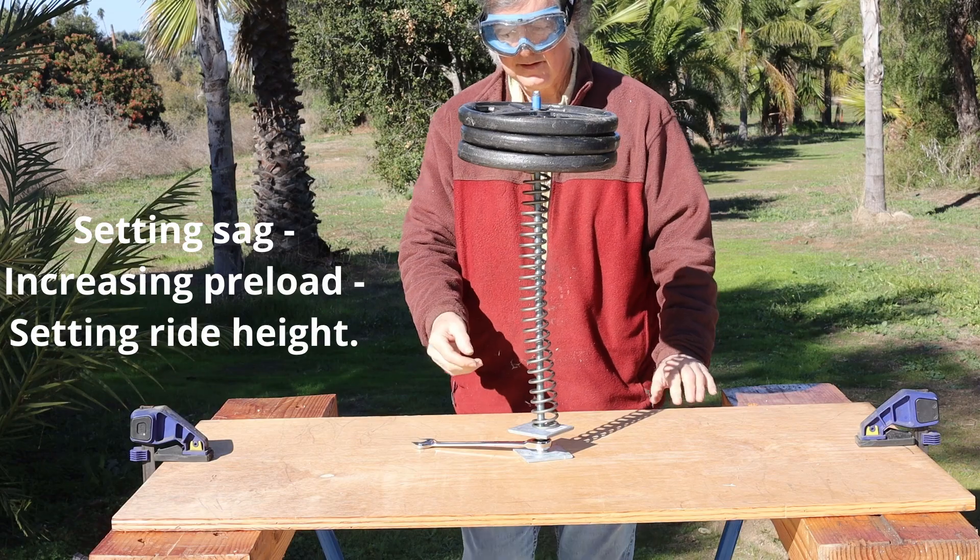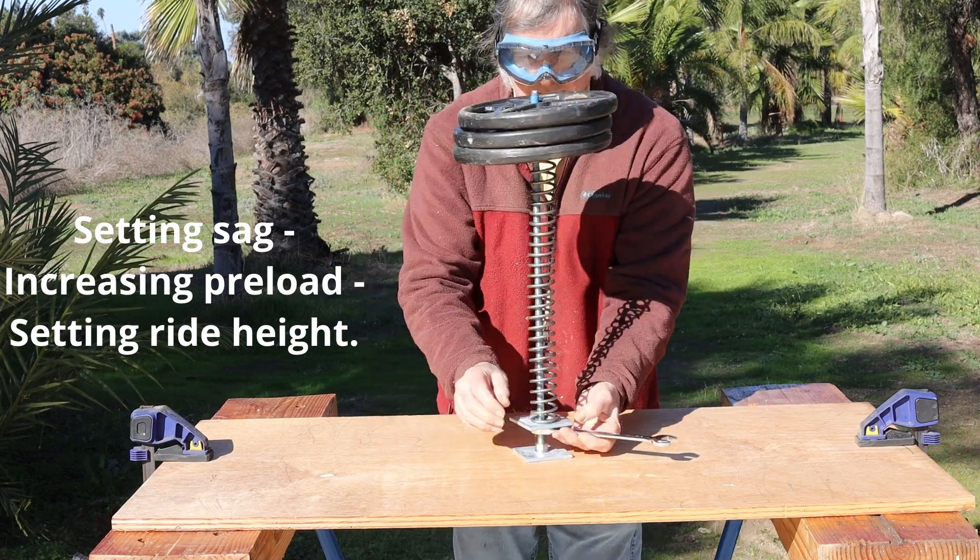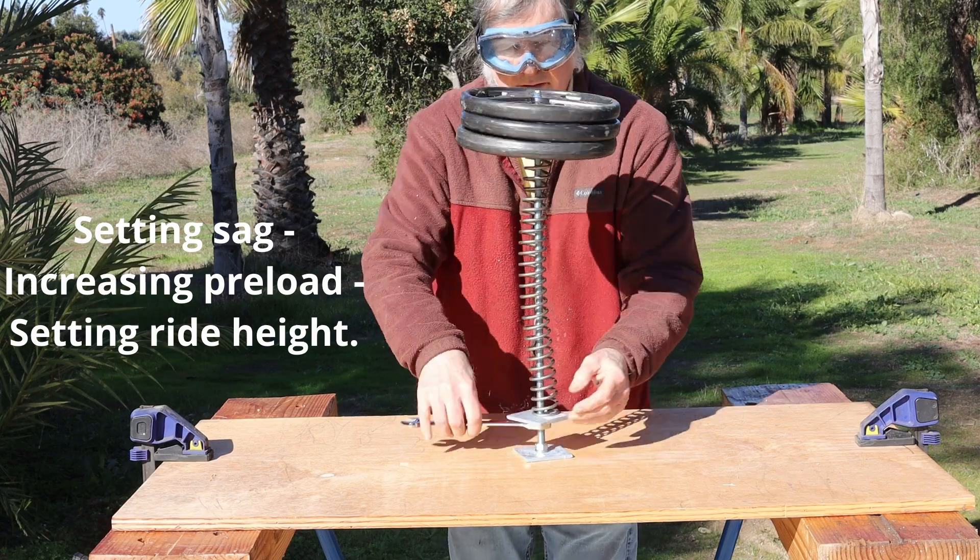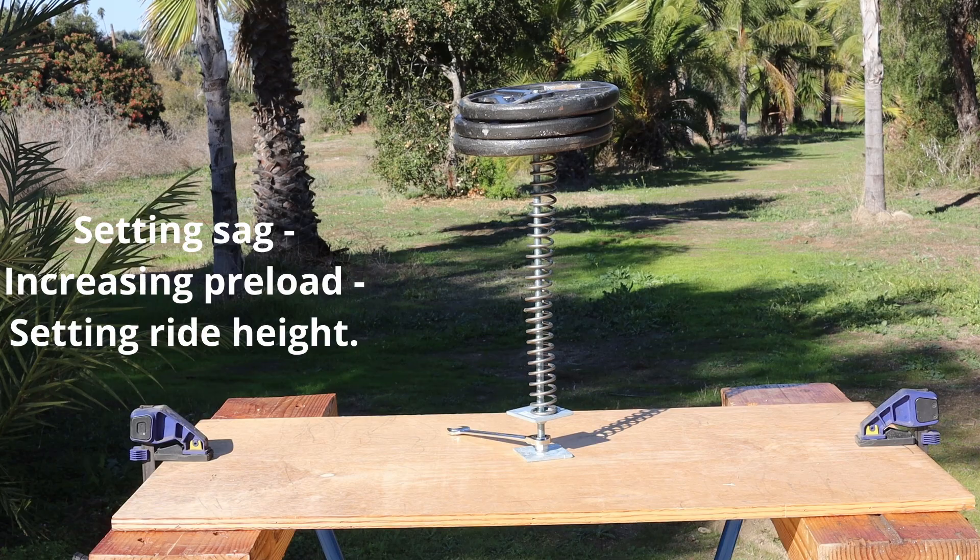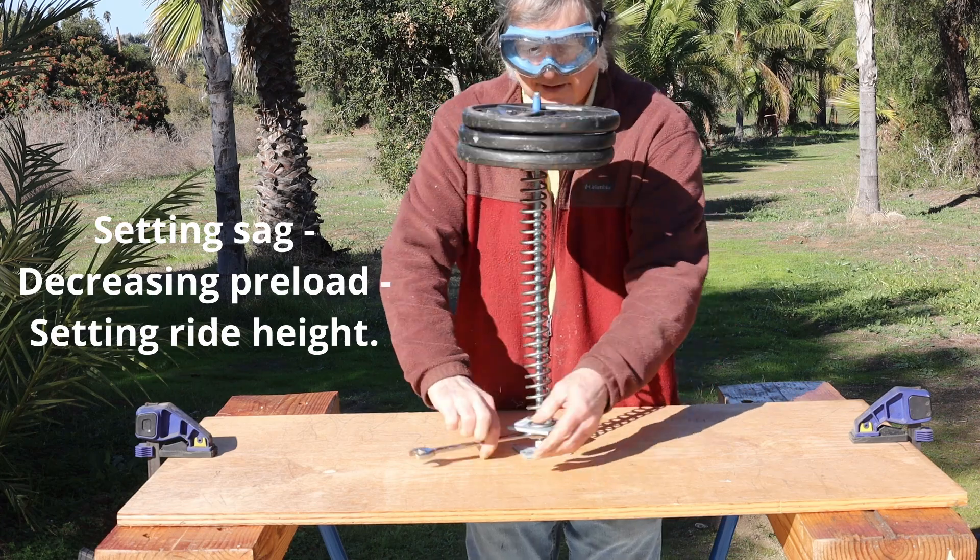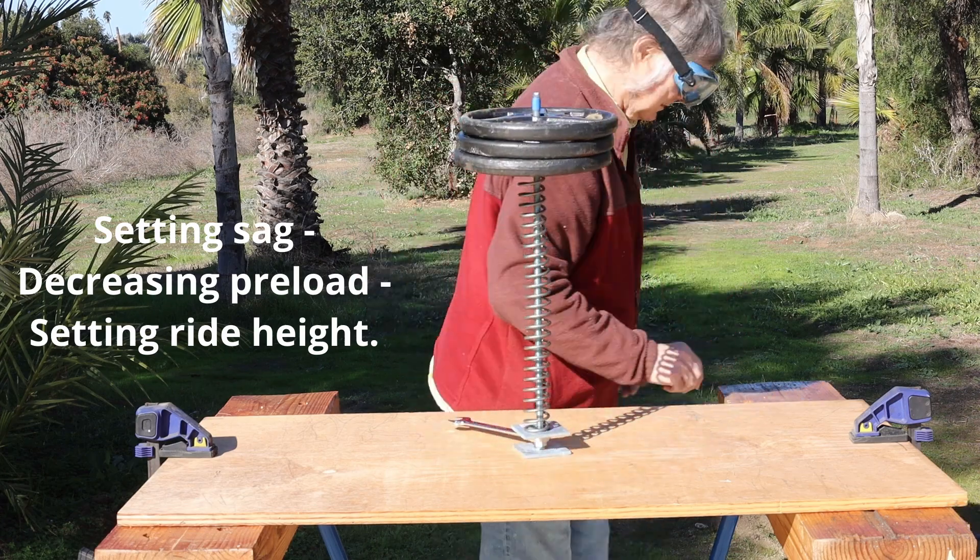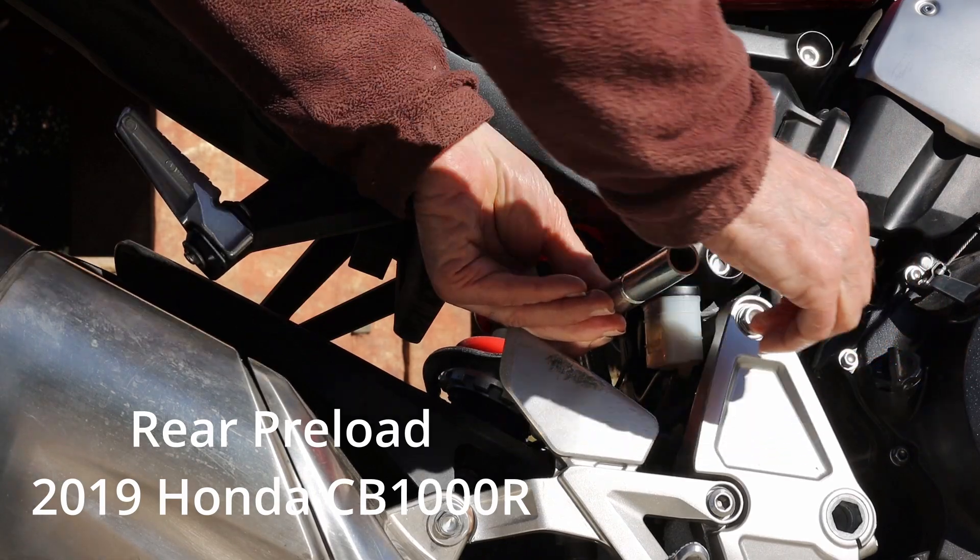Setting the sag, increasing or decreasing the preload, and setting the ride height all describe the same thing. Changing the preload does not change the amount of force it takes to bottom out the springs. Increasing the preload just lowers the range of motion. A light rider might not be heavy enough to get off the preload if it adjusted all the way up. Changing the spring constant does change bottoming out, but 99% of riders will just live with the springs they have.